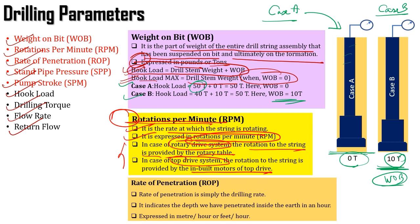Coming to the third drilling parameter, which is rate of penetration — rate of penetration is simply the drilling rate. The rate at which you are drilling a particular well is my rate of penetration. It indicates the depth where we have penetrated inside the earth in an hour, and it is expressed in terms of meters per hour or feet per hour.